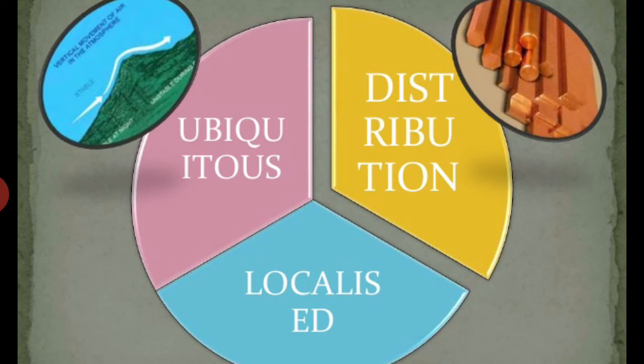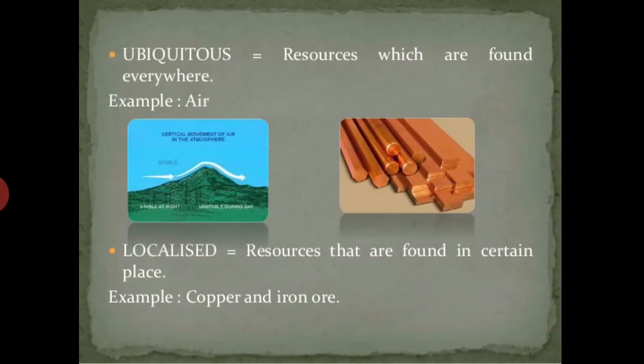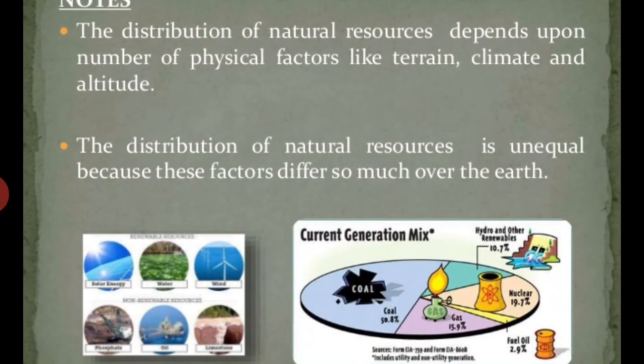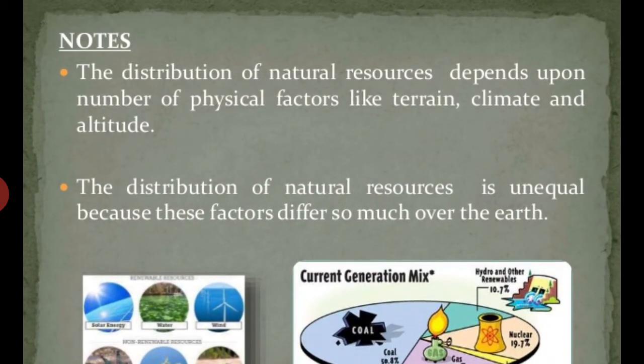On the basis of locality, there are two types: ubiquitous and localized. Ubiquitous resources are those found everywhere — for example, air is ubiquitous and is found in all places. Localized resources are those found only in a particular area — for example, copper, iron, and bauxite. Bauxite is found most abundantly in Odisha. The distribution of natural resources depends on a number of physical factors like terrain, climate, and altitude.